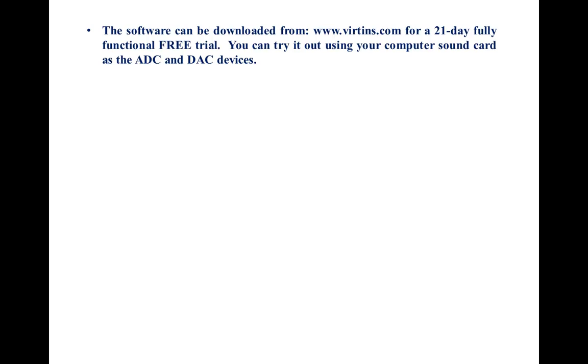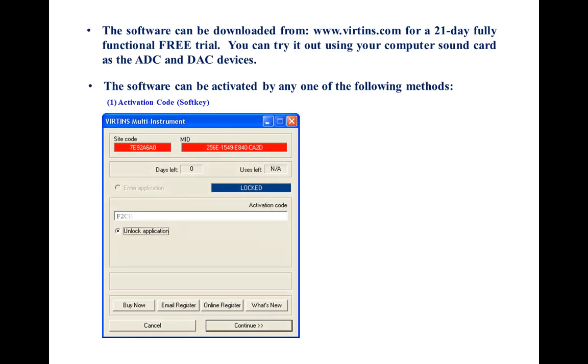The software can be downloaded from www.virtins.com for a 21-day fully functional free trial. You can try it out using your computer sound card as the ADC and DAC devices. The software can be activated by an activation code or soft key, or a USB hard key.